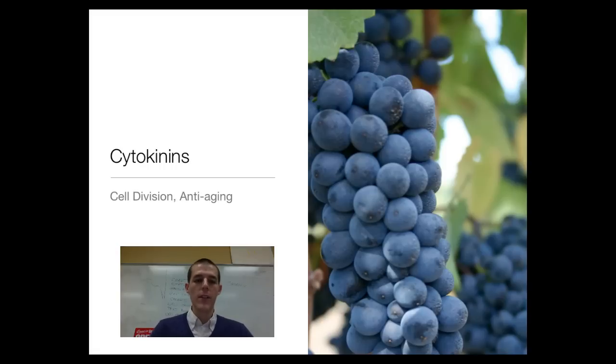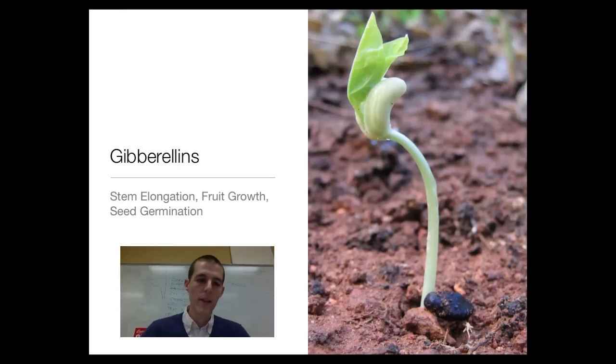Next on the list is gibberellin. Gibberellin is the last of our growth hormones. It is also responsible for stem elongation. So cytokinin, auxin, and gibberellin all work together to cause our stems to grow longer and to make the fruit grow bigger. Their special thing is they control seed germination. After a seed's been in the soil for a while, it takes in water. Once it's taken in that water, gibberellin is activated, which causes the seed to break dormancy and start growing. Gibberellin is the thing that tells the sleeping seed, time to wake up, let's get going.